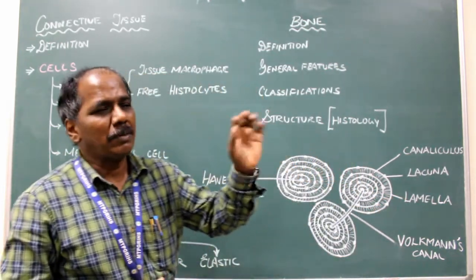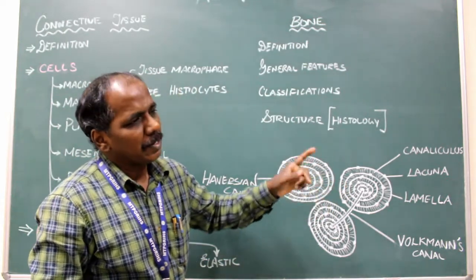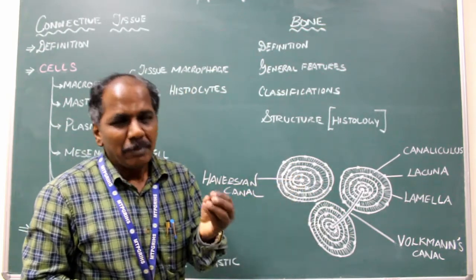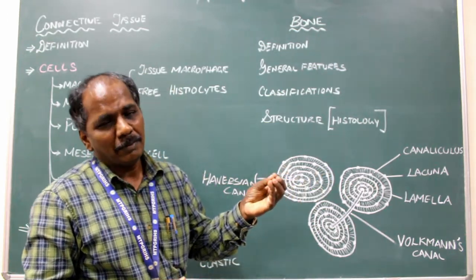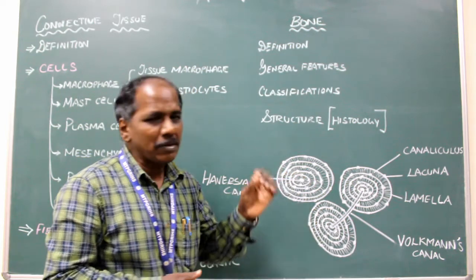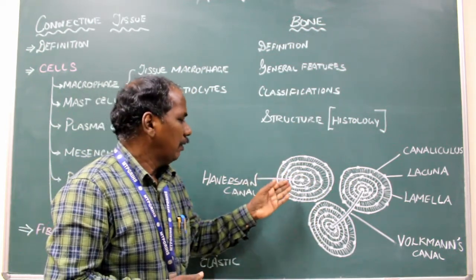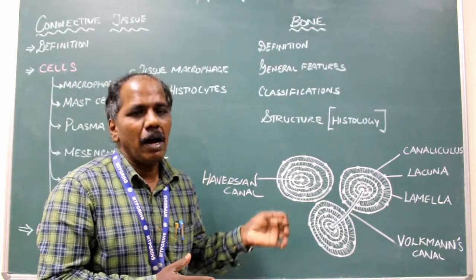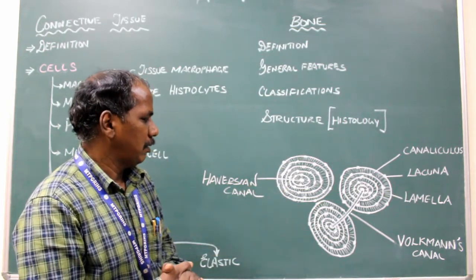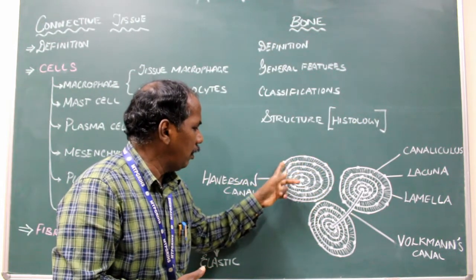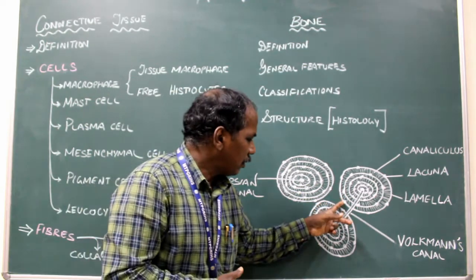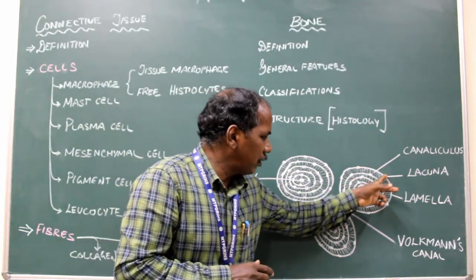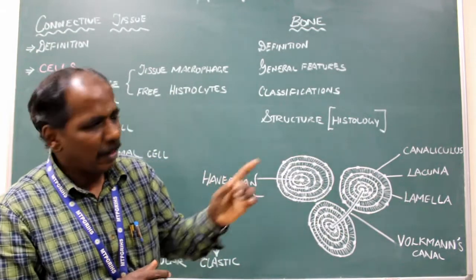The lamellae are produced by osteoblasts, that is the bone forming cells. The lamellae are produced by osteoblasts which later get trapped between the lamellae and become osteocytes. The osteocytes are present in a space. The osteocytes are present inside a space known as lacunae. Lacunae is plural and lacuna is singular.